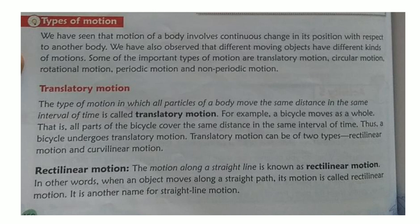Translatory motion has two subtypes: rectilinear motion and curvilinear motion. Rectilinear motion means motion along a straight line. In other words, when an object moves along a straight path, its motion is called rectilinear motion — it is another name for straight-line motion. Suppose any object is moving on a straight path, that is called rectilinear motion.